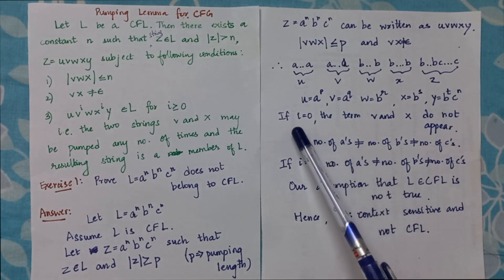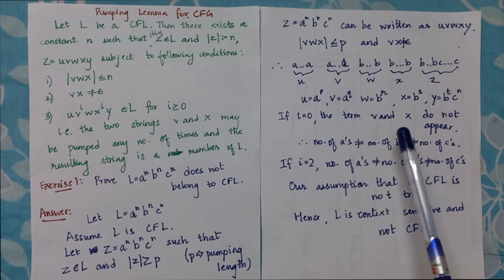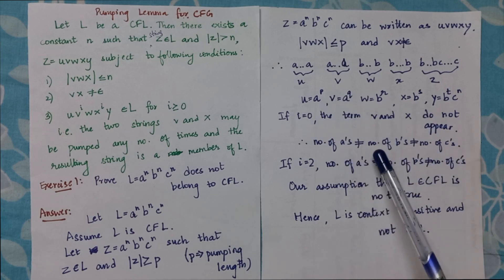Now in case if i is zero, that means I do not pump v and x at all. It will lead to the number of a's not being equal to the number of b's and not being equal to the number of c's.